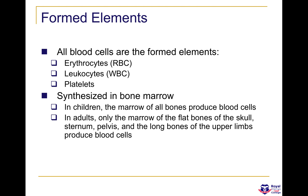Formed elements are the living organic part of blood — they include erythrocytes (red blood cells), leukocytes (white blood cells), and platelets. These are synthesized in the bone marrow. In children, the marrow of all bones produces blood cells, while in adults only the marrow of flat bones of the skull, sternum, pelvis, and the long bones of the upper limbs produce blood cells.